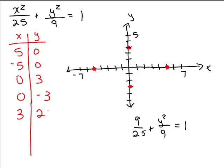So when x equals 3, y equals plus or minus 2 and 2/5. Going over 3 on the graph, we go up about 2 and 2/5 and also down 2 and 2/5. When you plug in negative 3, the same thing happens because squaring x gives the same result, so we also get the points (-3, 2 and 2/5) and (-3, -2 and 2/5).